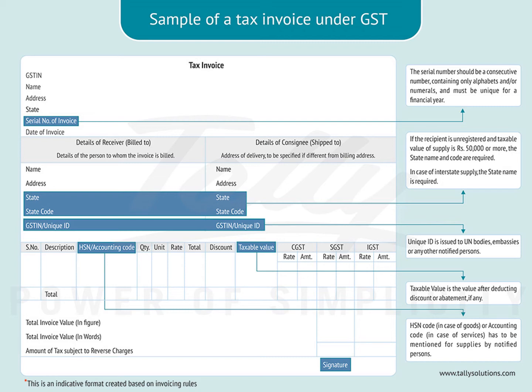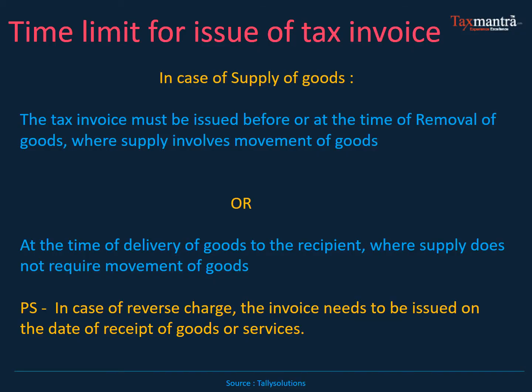What are the timelines for issuance of tax invoices? In case of supply of goods, the tax invoice must be issued before or at the time of removal of goods where supply involves movement of goods. So when you are selling goods, either before you send them to the customer or at the time of sending, you need to raise the invoice.